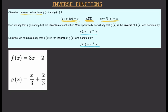Let's look at this example. We have f(x) = 3x − 2 and g(x) = x/3 + 2/3. We want to determine if these two functions are inverses of each other. The steps are simple: evaluate f(g(x)) and make sure it equals x, then evaluate g(f(x)) and make sure it also equals x. If both conditions are met, the functions are inverses of each other.